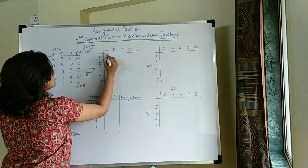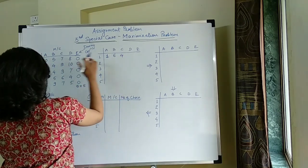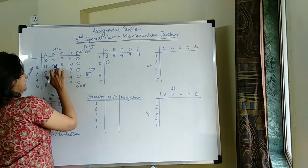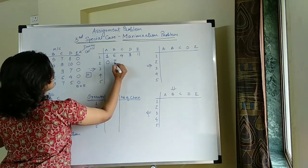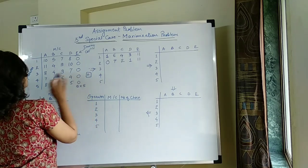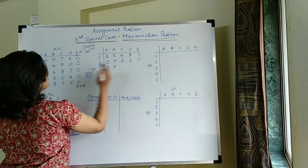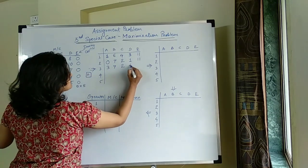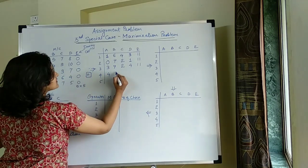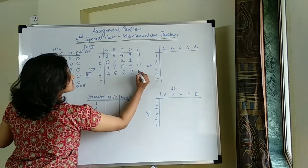So let's perform that operation: 11 minus 10 is 1, 11 minus 5 is 6, 11 minus 7 is 4, 11 minus 8 is 3, 11 minus 0 is 11. Then 11 minus 10 is 1, and 11 minus 0 is 11. 11 minus 8 is 3, 11 minus 4 is 7, 11 minus 9 is 2, 11 minus 9 is 2, 11 minus 9 is 2, 11 minus 10 is 1, and 11 minus 10 is 11.